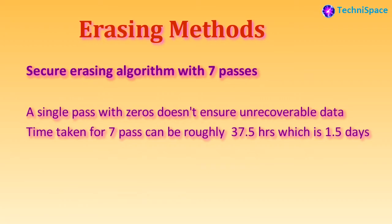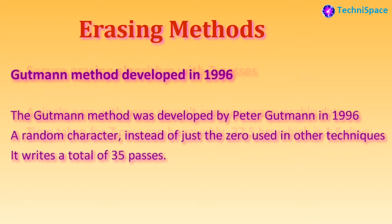The next method is a secure erasing algorithm with seven passes. A single pass with zeros is not sufficient to erase magnetic artifacts from a disk, as it is still possible to recover data from the drive. Therefore, a seven-pass method using random data overwriting is used to prevent data recovery. One drawback is that it is a time-consuming process and can take up to 27.5 hours, or about 1.5 days.